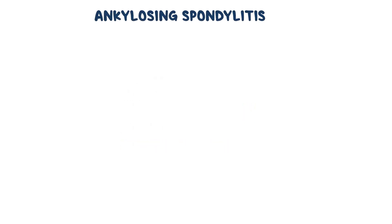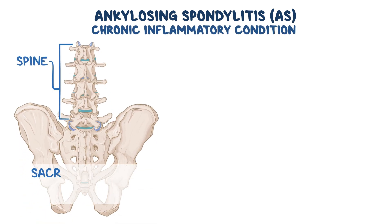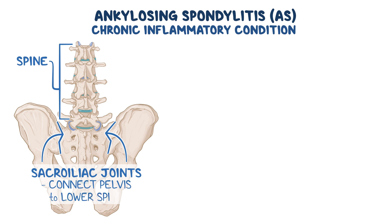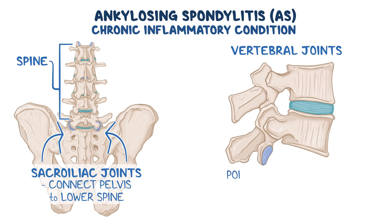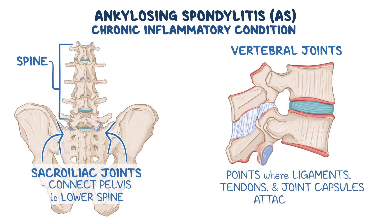Ankylosing spondylitis, or AS for short, is a chronic inflammatory condition that primarily affects the spine and sacroiliac joints, which connect the pelvis to the lower spine. In AS, inflammation primarily affects the vertebral joints in the spine, specifically the points where ligaments, tendons, and joint capsules attach to bone.